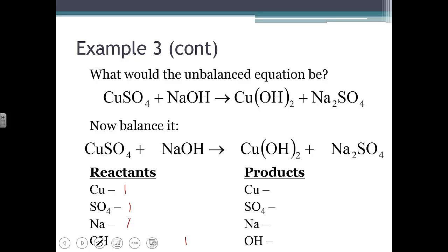On the product side we have one copper, one sulfate, two sodiums, and two hydroxides. So what doesn't match is the sodium and the hydroxide. Let's try the sodiums to get those to match. I need two on the left to match my two on the right. So to get two on the left, I need to insert a coefficient of two in front of sodium hydroxide.